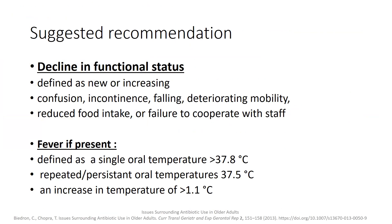When do you suspect an infection in an elderly person? Recommendations from the Infectious Diseases Society of America state that a new or increasing decline in functional status — mainly confusion, incontinence, falling, deterioration in mobility, reduced food intake, or failure to cooperate — and/or the presence of fever defined as a single oral temperature above 37.8°C, repeated persistent oral temperature above 37.5°C, or a temperature increase of more than 1.1°C, should prompt you to look thoroughly for an infection, but doesn't necessarily mean you need to start empiric antibiotics.